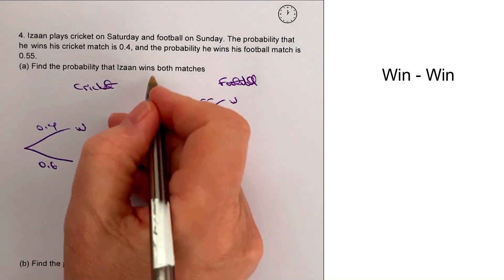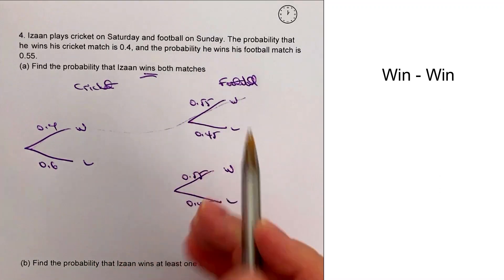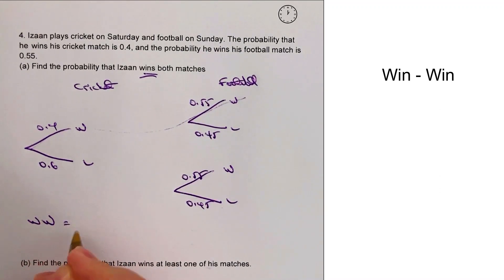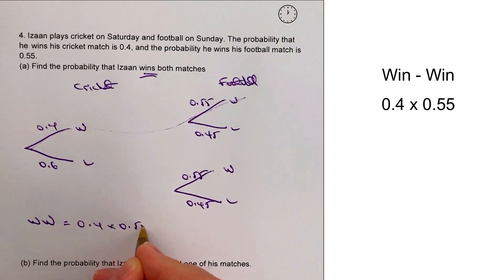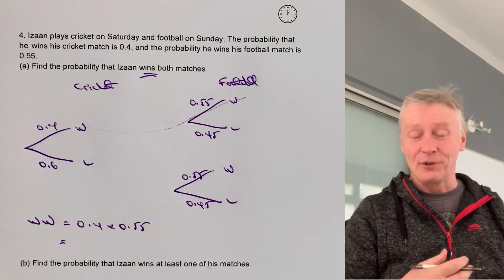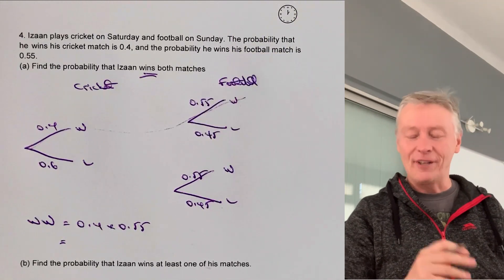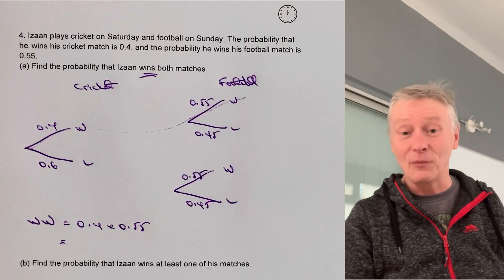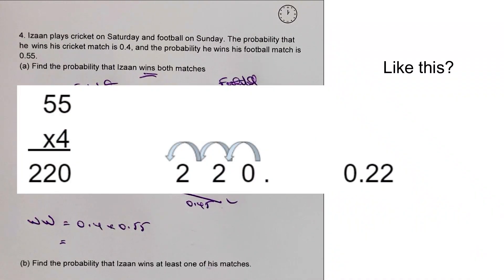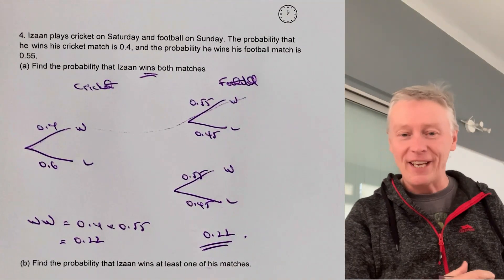The first part asks for the probability that he wins both matches. Win-win equals 0.4 multiplied by 0.55. This would typically be a non-calculator paper — doing 55 times 4 and adjusting the decimal gives 0.22. So the probability of him winning both games is 0.22.